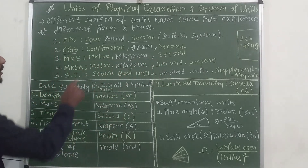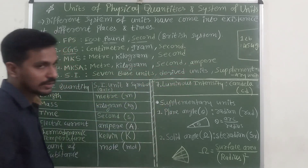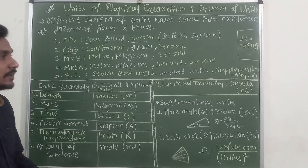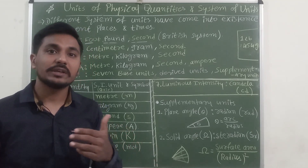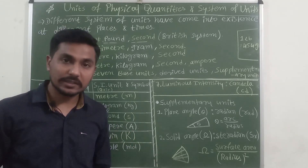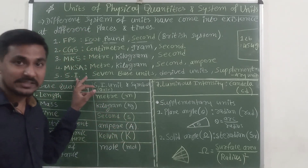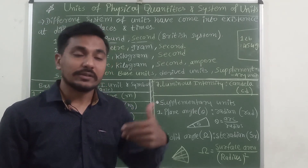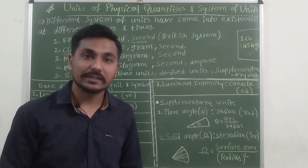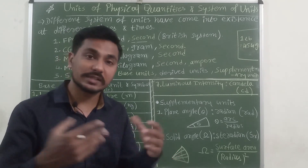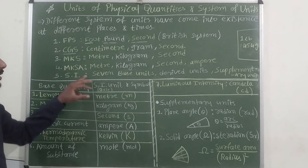Then MKSA — meter, kilogram, second, and ampere (the unit of electric current). After that, the problem was that different countries using different systems made trade and communication very difficult. So they developed the International System of Units (SI), deciding on a fixed system accepted worldwide. In this system, there are seven base units.